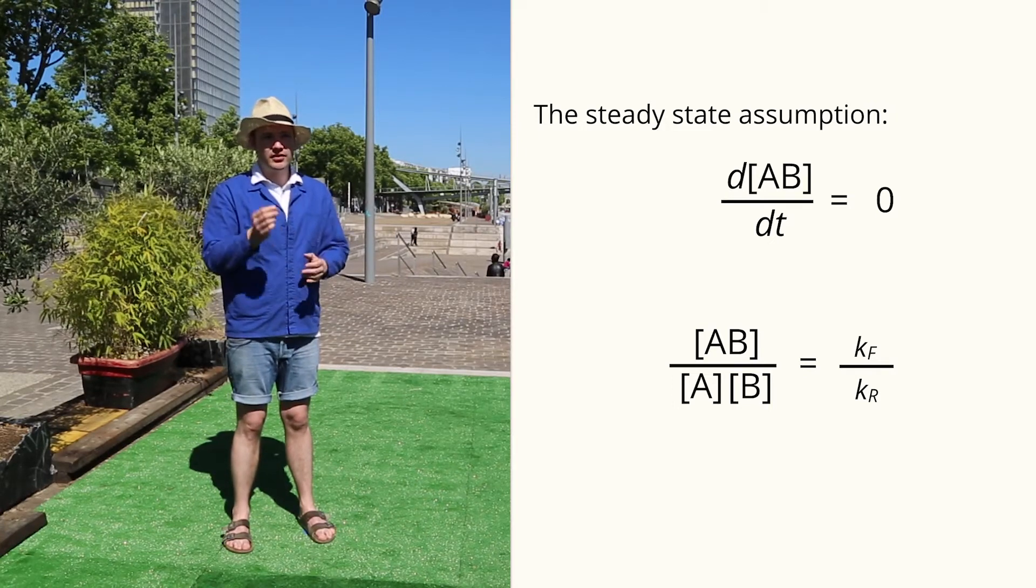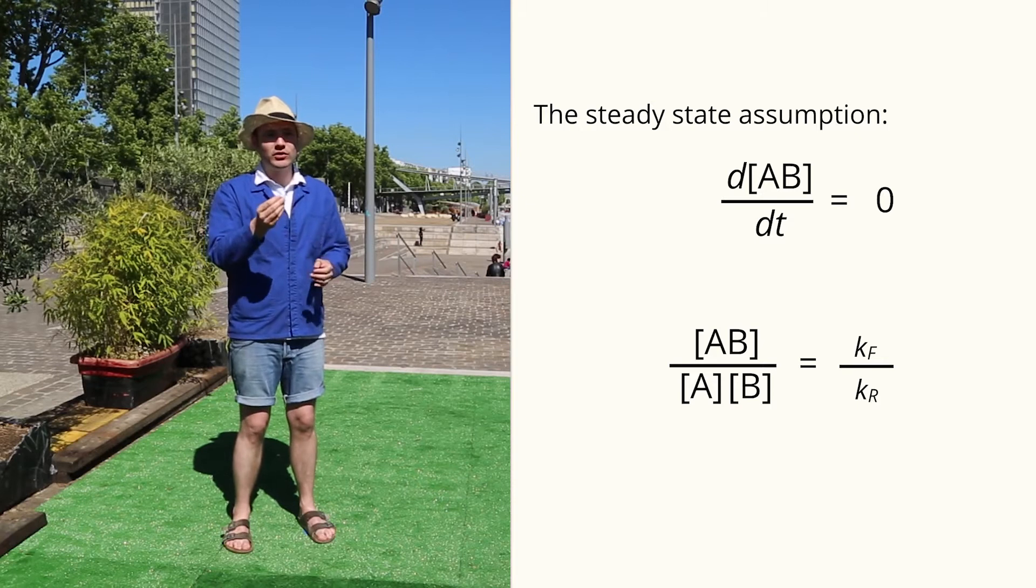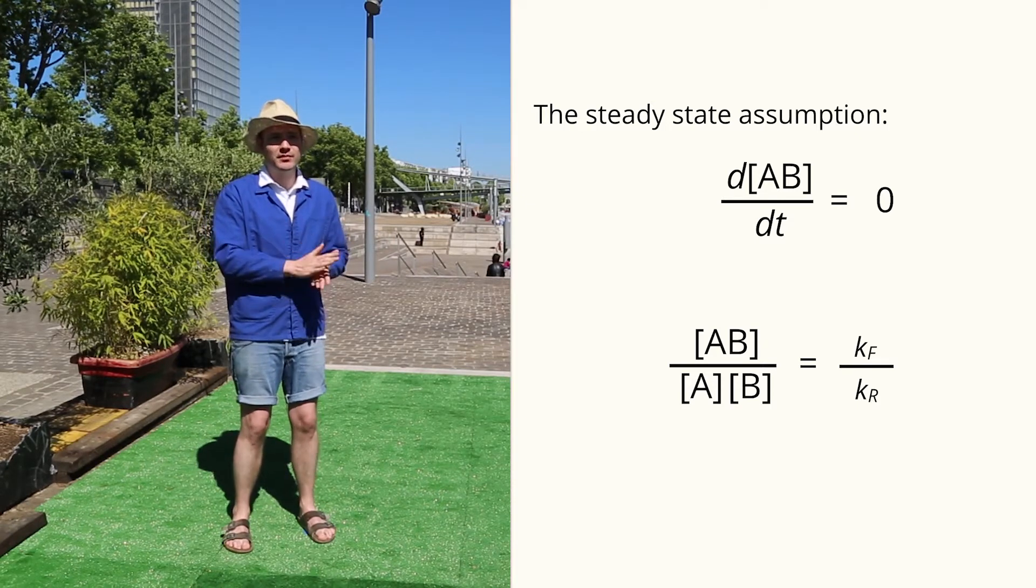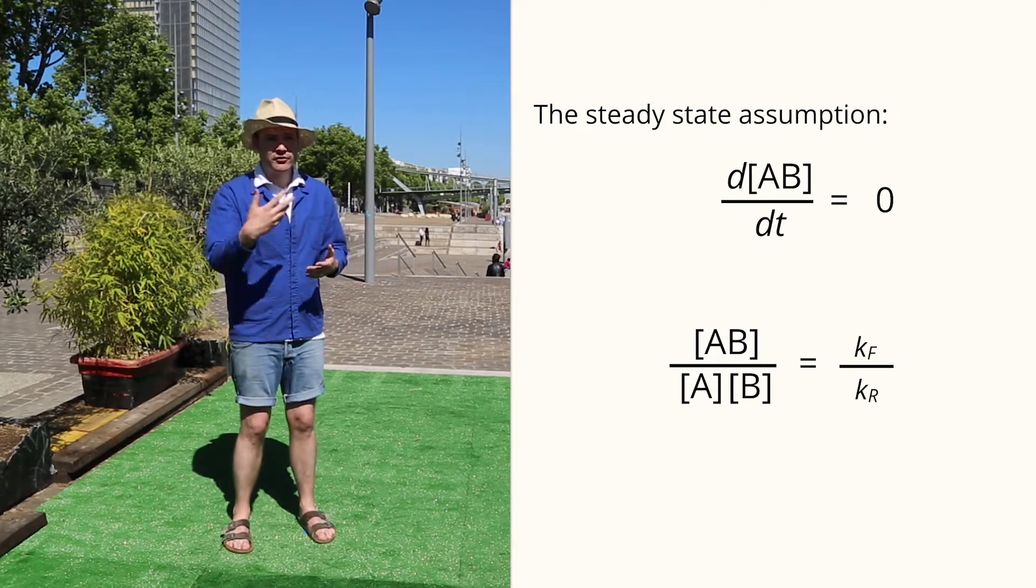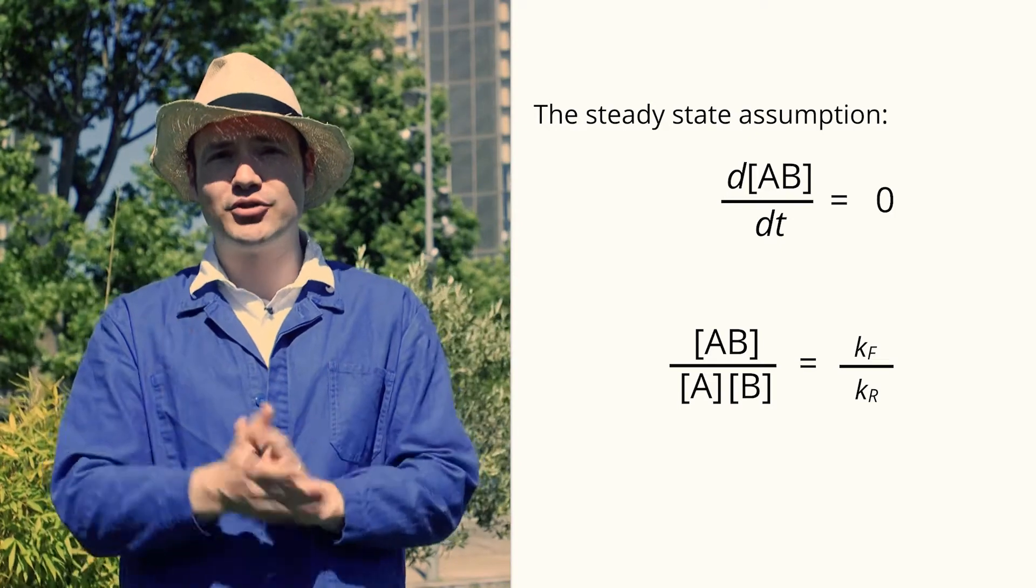This ratio, Kf over Kr, is sometimes called the equilibrium constant. It has a special name because it's a useful way to get quick information about an equilibrium reaction like this one.